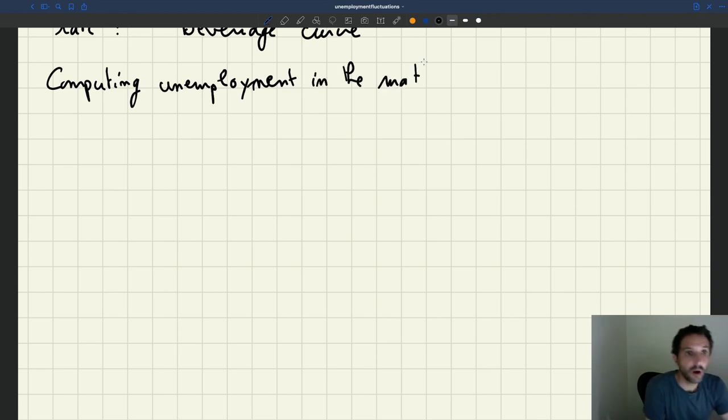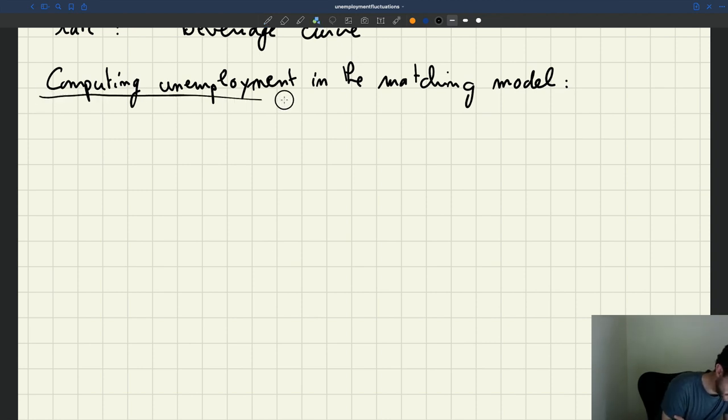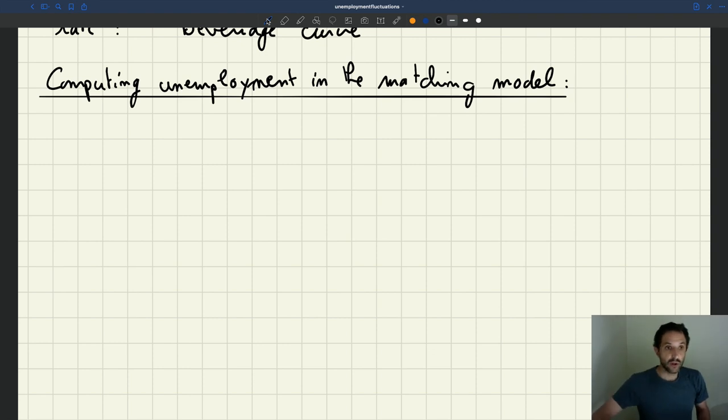So how are we going to compute and implement in our matching model? We know that in the matching model, a key lesson to remember is that everything is determined by the labor market tightness. So first question is how do we compute the labor market tightness? And remember that the labor market tightness is determined by an equilibrium condition.